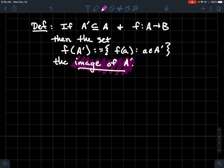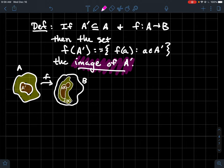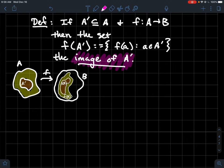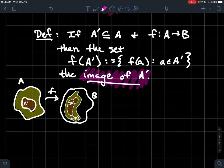If A prime is a subset of A, and you've got a function from A to B, then we'll say that F of A prime, what is that? That's the set of all outputs where input came from A prime. We'll call that the image of A prime.